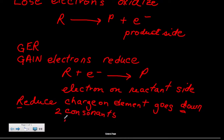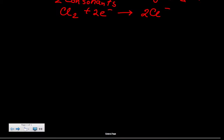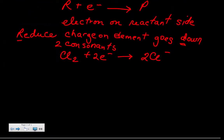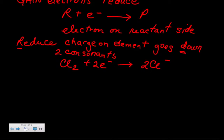And here's an example. Just writing it out. Two consonants, reduce and down, reduce down, R R consonants. Here's an example. Chlorine, it's the element. If we can force it to pick up two electrons, it'll become two chloride ions with a negative one. The charge on the chlorine is zero, and the charge in the chloride is minus one.